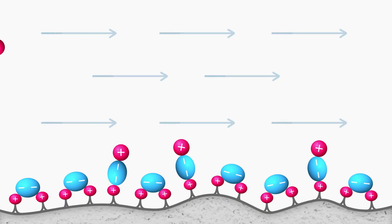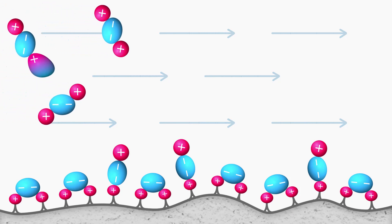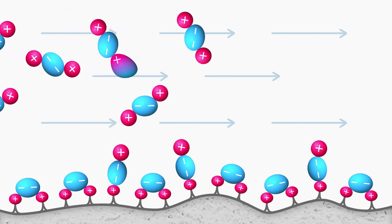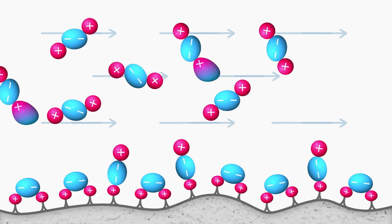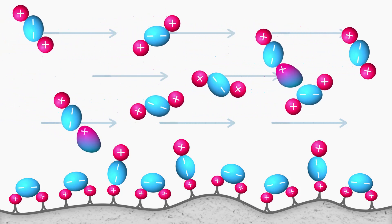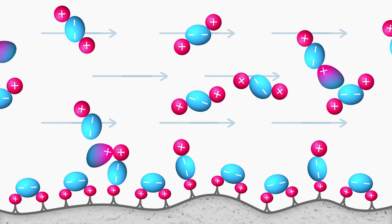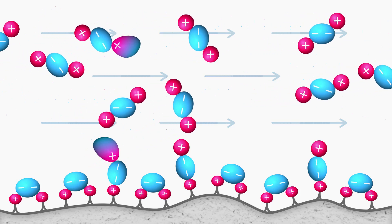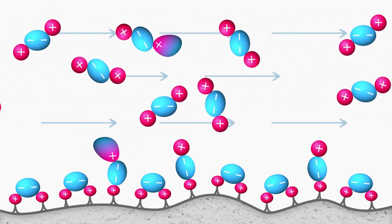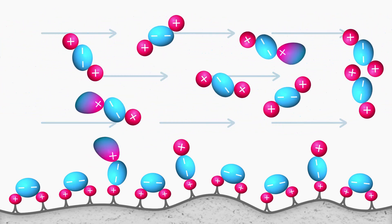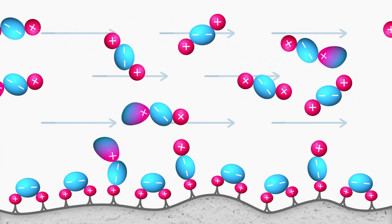Here we show a visualization of the interactions that generate BIST. The doubly charged modifier ions have been introduced to the highly organic mobile phase. Since the solution is not aqueous, the doubly charged modifier ions pair with the surface, generating a net negative charge. This allows for the positively charged analytes to be retained.